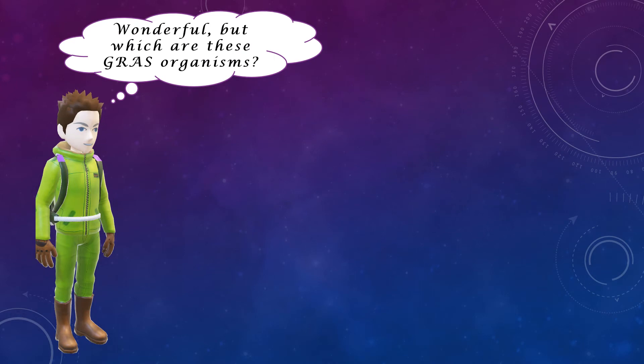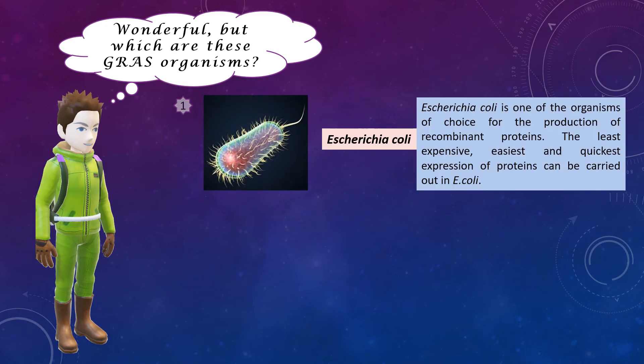So by now you all must have understood what exactly these GRAS organisms are. Now let us see some examples. Number one is obviously Escherichia coli — the favorite for all researchers — because it is the least expensive, and the easiest and quickest expression of proteins can be carried out in E. coli.